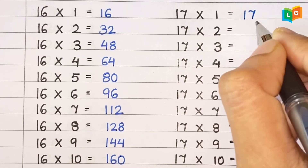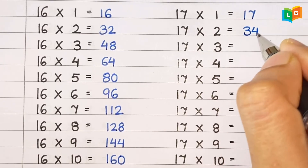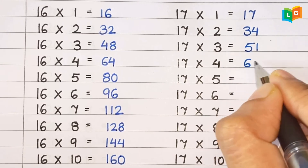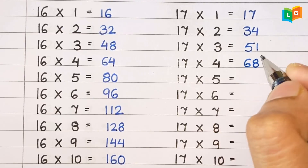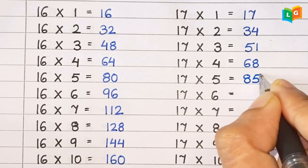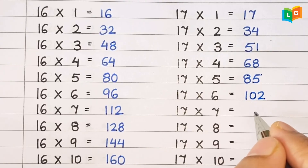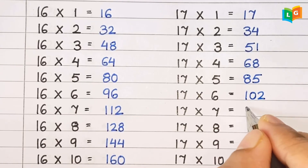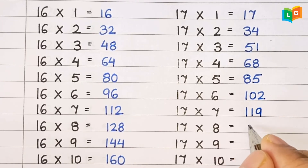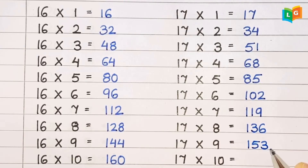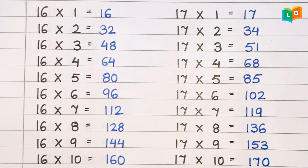Now let's see table of 17. 17 1s are 17, 17 2s are 34, 17 3s are 51, 17 4s are 68, 17 5s are 85, 17 6s are 102, 17 7s are 119, 17 8s are 136, 17 9s are 153, 17 10s are 170.